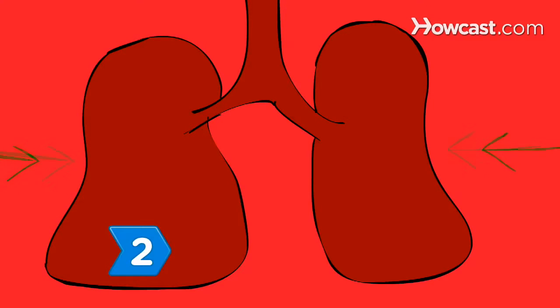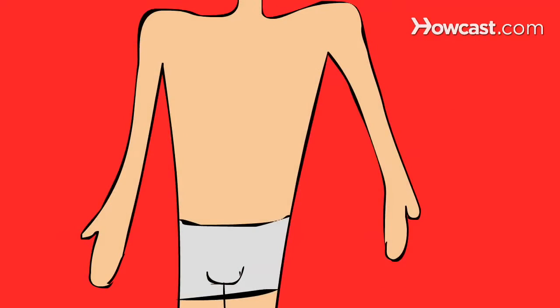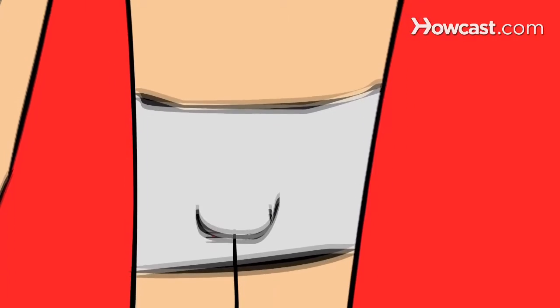Step 2. Know the two types of mesothelioma. Pleural malignant mesothelioma affects the tissue around the lungs, known as the pleura. Rarer forms of mesothelioma affect the tissue around the heart, abdomen, and testicles.